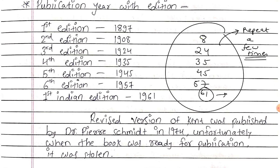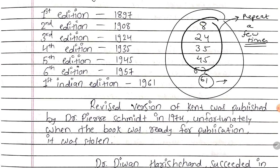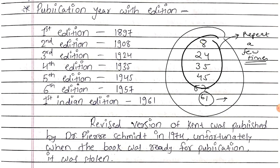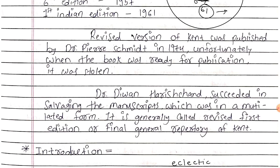To remember the edition years, note the numbers 8, 24, 35, 45, 57, and 61. There is no special trick to remember it, but if you repeat it a few times you can of course remember it: 1897, 1908, 1924, 1935, 1945, and 1957. The first Indian edition was published in 1961.